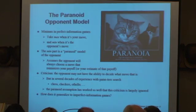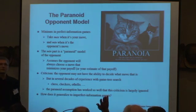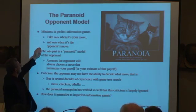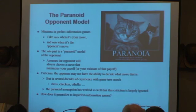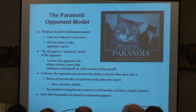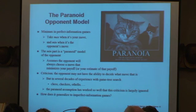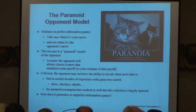Let's backtrack to perfect information games. The main point I want to make is that one part of the Minimax formula is a paranoid model of the opponent — you're assuming that the opponent is always going to choose a move that is worst for you, or at least your estimate of what is worst for you. The criticism is that the opponent may not actually have the ability to decide what that move is. But in several decades of experience with game research in games like checkers, chess, Othello, this assumption has worked so well that people just sort of take it for granted.